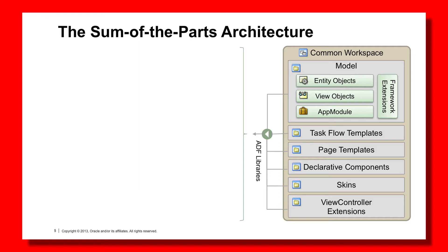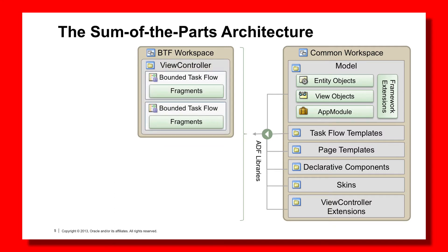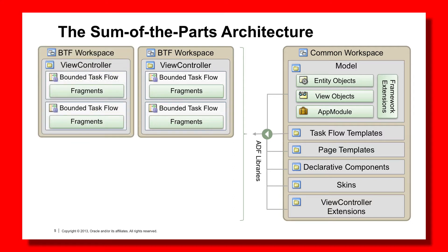From here, we will have one to many Bounded Taskflow workspaces. The Bounded Taskflow workspaces will include a ViewController project and one to many Bounded Taskflows and the associated fragments. In the diagram here I've got two Bounded Taskflows, but you could have lots — the diagram is just limited by space. Now this Bounded Taskflow workspace is reliant on some things from the Common workspace, such as the model project, the Taskflow templates, and so on. You might have multiple Bounded Taskflow workspaces — this could be one, or 10, or 50. There's really no limit in this particular architectural pattern. The main key element is that we put the Bounded Taskflows into separate workspaces.